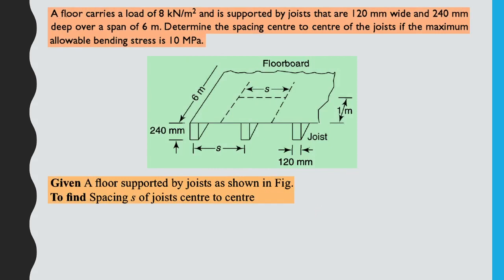Problem 4: A floor carries a load of 8 kN/m² and is supported by joists that are 120 mm wide and 240 mm deep over a span of 6 m. Determine the center-to-center spacing of the joists if the maximum allowable bending stress is 10 MPa (10 N/mm²). We need to find the spacing S.